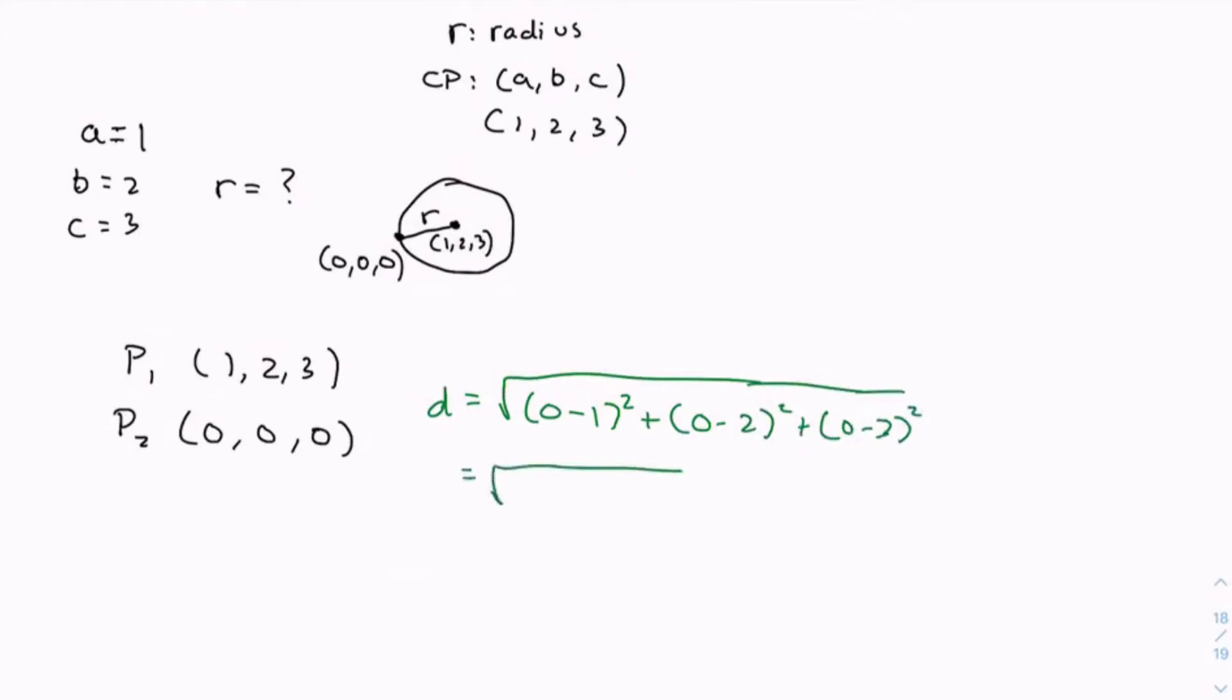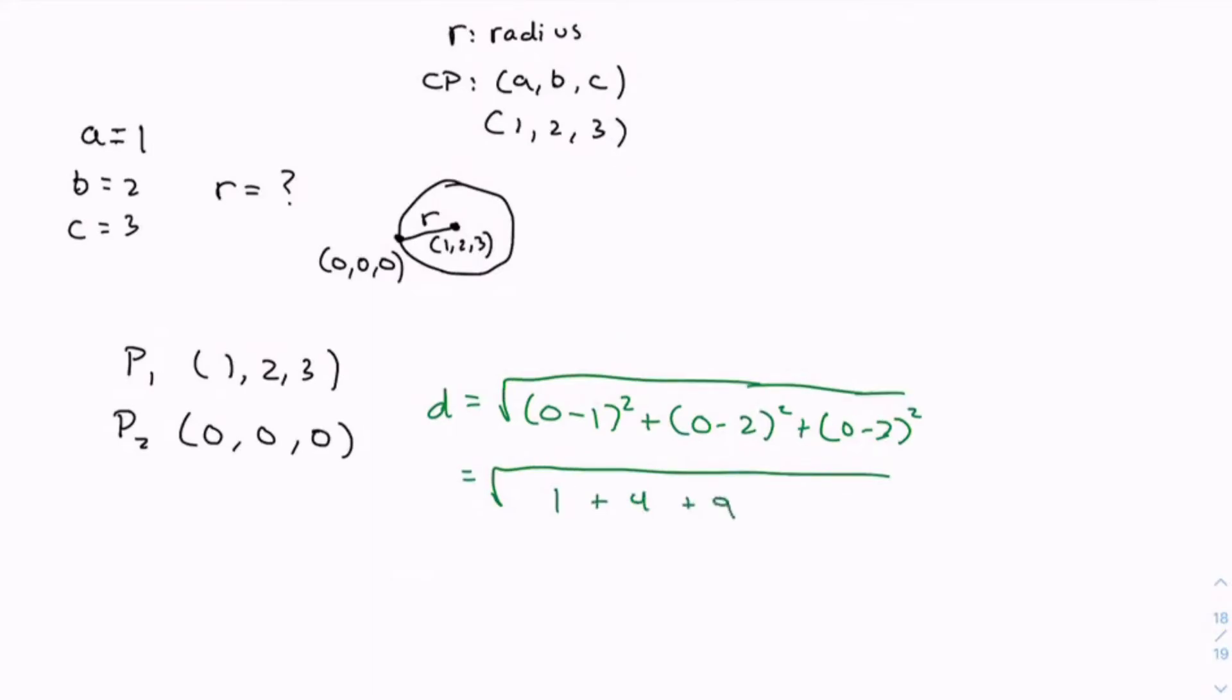which equals 1² which is 1, plus (-2)² which is 4, plus (-3)² which is 9, equals the square root of 14.